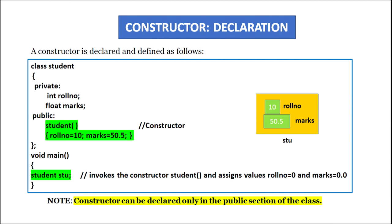In main, when we create the object of this class using the statement 'student s', at that time memory will be allocated to the data members roll number and marks, and the constructor function will be invoked automatically and assigns value 10 to roll number and 50.5 to marks. It is very essential to note that constructors should be declared in the public section of the class, and if they are declared in the private section, then an object won't be able to access or invoke it.